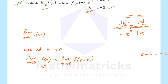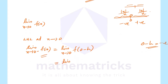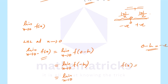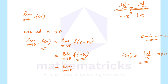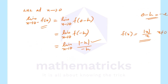For the left-hand limit, we evaluate f of 0 minus h. The function f of x is mod x divided by x. So f of minus h equals mod of minus h divided by minus h. The modulus value is always positive, so mod of minus h equals h, just as mod of minus 3 is 3.